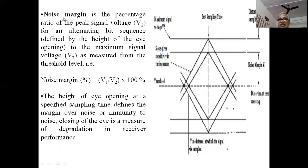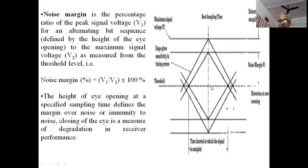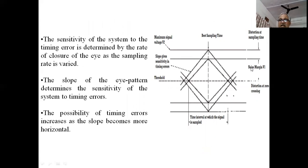The noise margin is the percentage ratio of the peak signal voltage V1 for an alternating bit sequence to the maximum signal voltage V2, as measured from the threshold range. Noise margin (%) = (V1 / V2) × 100%. The height of the eye opening at a specified sampling time defines the margin over noise, or immunity to noise. Closing of the eye is a measure of degradation in receiver performance, and the noise margin region defines the range within which we can tolerate noise.